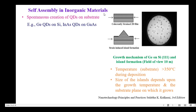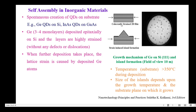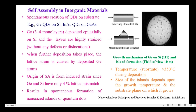Next, let us move on to self-assembly in inorganic materials. Here, we are going to see the spontaneous creation of quantum dots on substrates — for example, germanium quantum dots on silicon substrate and indium arsenide quantum dots on gallium arsenide substrate. We have the silicon substrate, with 3 to 4 layers of germanium deposited epitaxially on it. The layers are highly strained and formed without any defects or dislocations. However, with further deposition, the lattice strain is induced by the deposited germanium atoms — the induced strain is the origin for self-assembly, since germanium and silicon have only 4% lattice mismatch. This results in the formation of nano-sized islands, or quantum dots. This is the electron microscope image of germanium quantum dots on silicon substrate. The temperature should be greater than 350°C during deposition, and the size of the island depends upon the growth temperature and the substrate plane on which it grows.